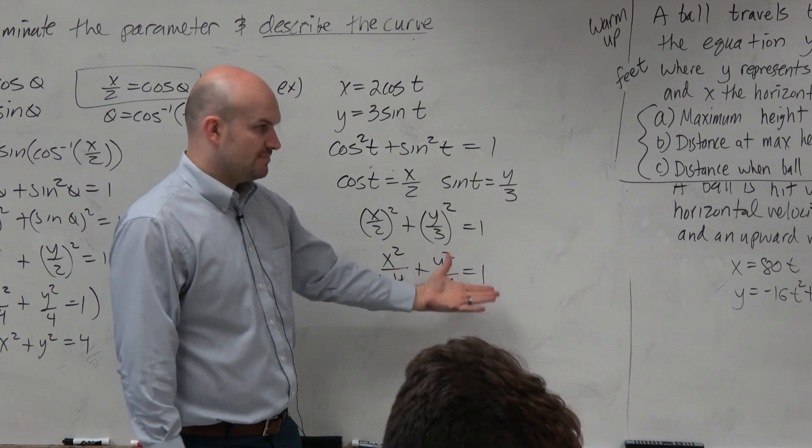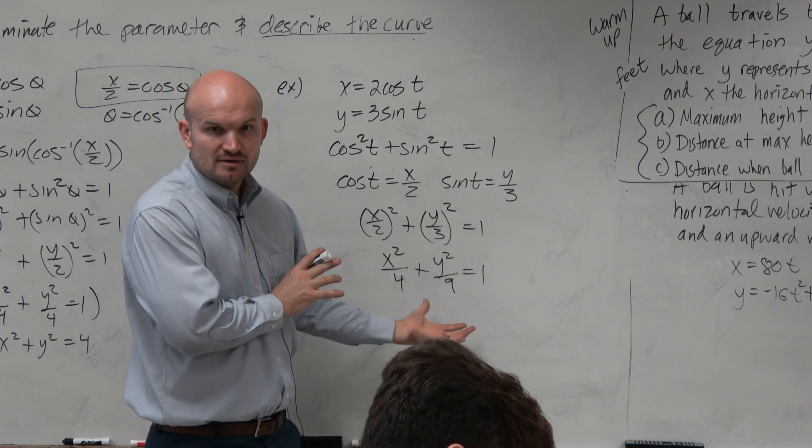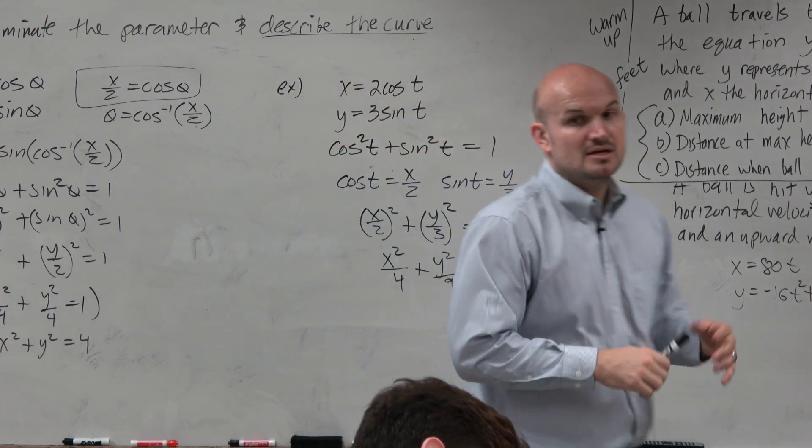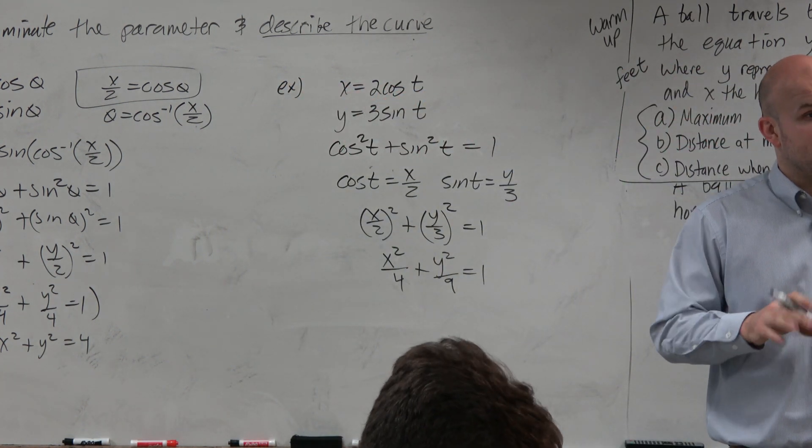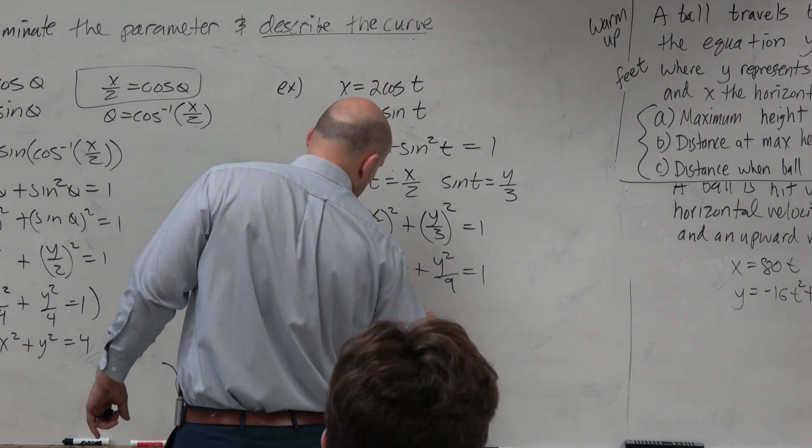You can see here, my x and my y's are actually being impacted differently by different scalars, right? They're being divided by different numbers. So this is actually going to take on an oval shape, or mathematically what we call an ellipse.